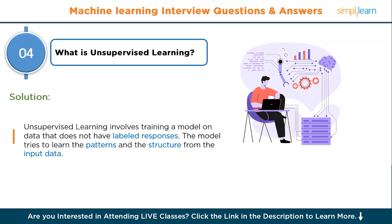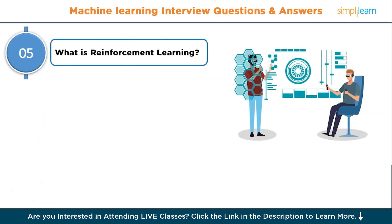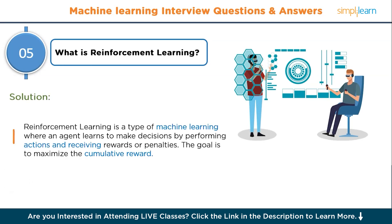Now moving to question number five: what is reinforcement learning? Reinforcement learning is a type of machine learning where an agent learns to make decisions by performing actions and receiving rewards or penalties. The goal is to maximize the cumulative reward.